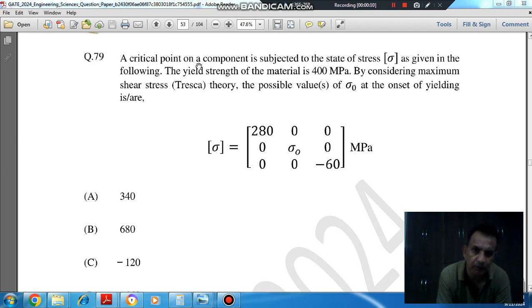A critical point on a component is subjected to the state of stress sigma as given in the following. The yield strength of the material is 400 MPa. By considering maximum shear stress or Tresca theory, the possible values of sigma node at the onset of yielding is R.